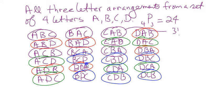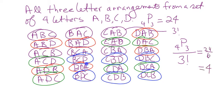So what we do is take 4P3, but 4P3 has order built in — it's a permutation. We divide it by 3 factorial, which takes out the order. There's only one-sixth of these 24 that are unique groupings: ABC, ABD, ACD, and BCD. So 24 over 6 equals 4.